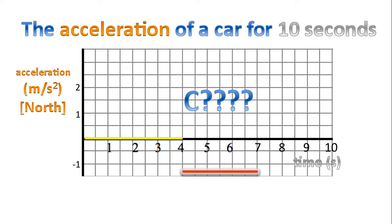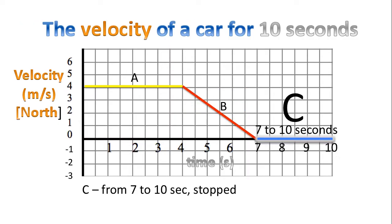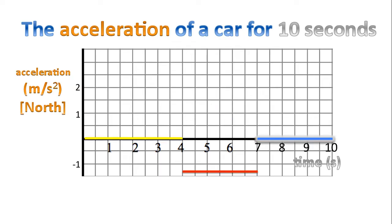What about section C? The rise is zero. The run is three seconds and we end up with an acceleration of zero. And that's how we plot the last part of the graph. It starts at seven seconds and ends at 10 seconds.